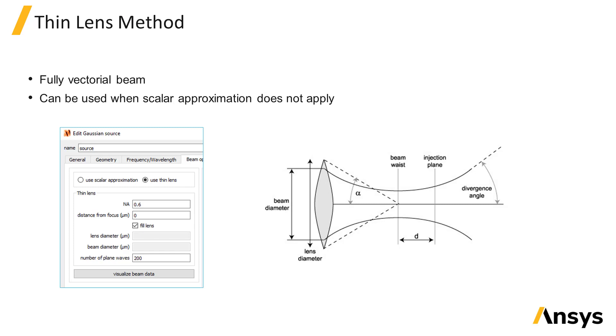For more highly focused beams where the beam waist diameter is on the order of or smaller than the source wavelength, the scalar approximation breaks down. In this case, the thin lens method should be used instead. Note that the thin lens method is only available when using the Gaussian type beam, and it's not available for the Cauchy-Lorentz beam.